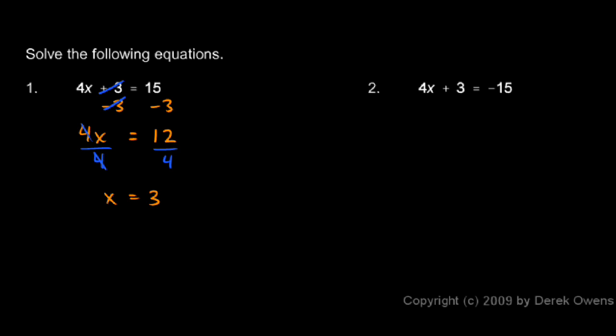All right, number two: 4x plus 3 equals negative 15. This is a similar problem, we just have the negative sign right there. We still want to solve for x, which means we need to isolate the term that contains x. So we get rid of the 3. I do minus 3 to get rid of the 3 right there, and if I subtract 3 on the left, I have to subtract 3 on the right. When I do that, on the left side I'm left with 4x again, and on the right side I have negative 15 minus 3, which is negative 18.